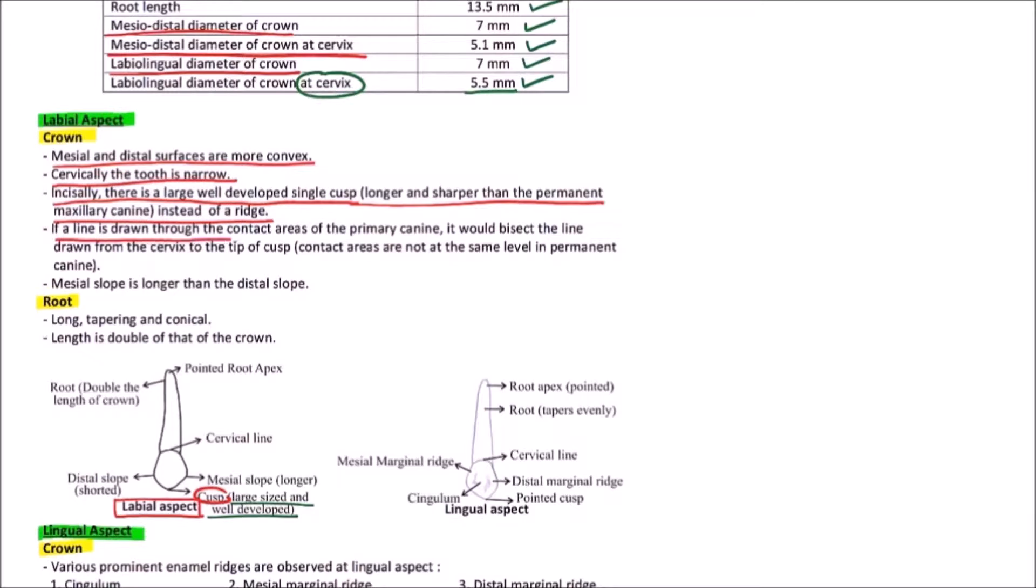If a line is drawn through the contact areas of the primary canine, it would bisect the line drawn from the cervix to the tip of the cusp. Contact areas are not at the same level in the permanent canine, but here contact areas are at the same level.